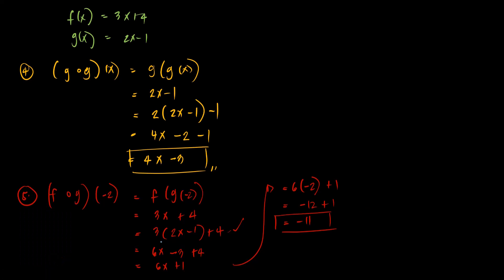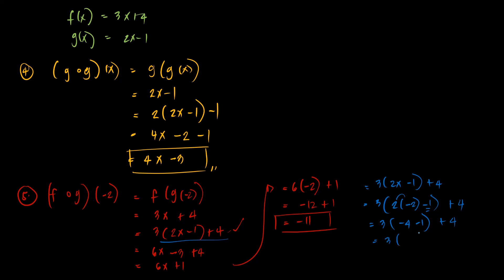For the direct substitution method, given the same step, insert negative 2 directly. Simplify inside the group first using order of operations: 2 times negative 2 gives negative 4. Copy the constant negative 1. Then negative 4 minus 1 gives negative 5, so we have 3 times negative 5 plus 4, which is negative 15 plus 4, giving negative 11. Different solution, but we arrive at the same answer.